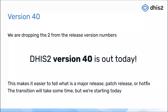This helps make it easier to tell what is a major release, a patch release, or a hot fix. For example, DHIS2 version 40 will have its first patch release called DHIS2 version 40.1, and it might have a hot fix called DHIS2 version 40.1.1 or 40.1.2. This gives three parts to the version number, making it very clear what is being released when. So today we are releasing DHIS2 version 40.0.0.